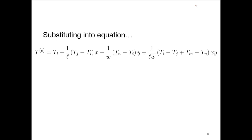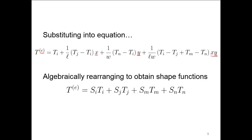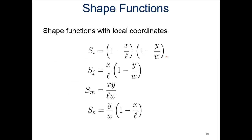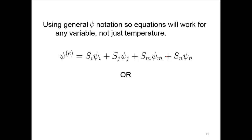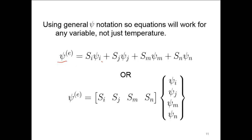Putting those all together and substituting them back in, we can determine the temperature at any location within the element given the x and y coordinates. If we rearrange this to collect terms for Ti, Tj, Tm, and Tn, we can obtain the shape functions in local coordinates for nodes i, j, m, and n. Using general notation with psi instead of temperature, we can use these shape functions to find psi at any location, expressed in matrix form.